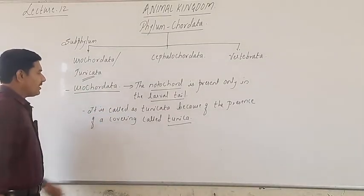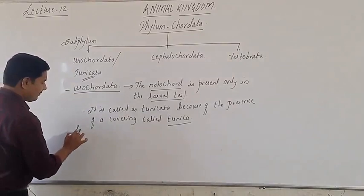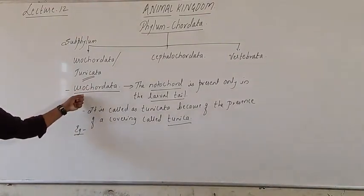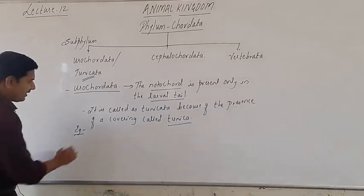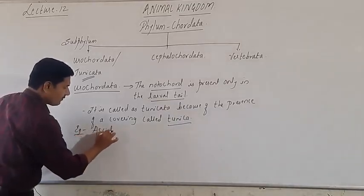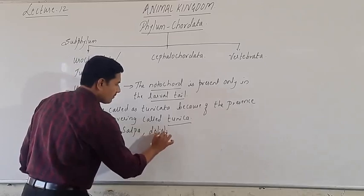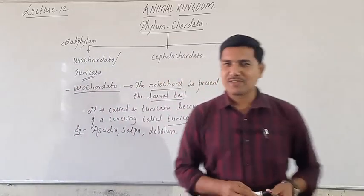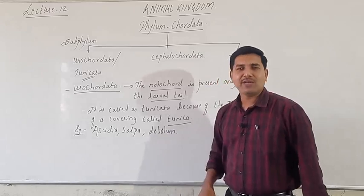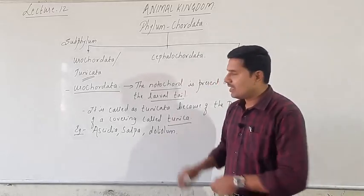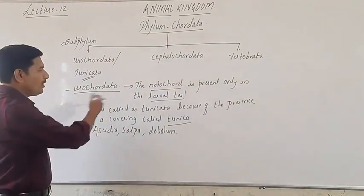Apart from this, let us look at the examples of Urochordata. As they are present in marine water, the examples include Ascidia, Salpa, and Doliolum. These are the examples. Other examples are also there, but the members are fewer. This is regarding the part of Urochordata.